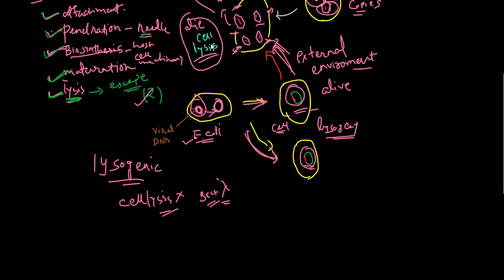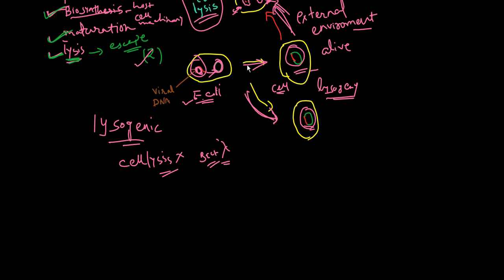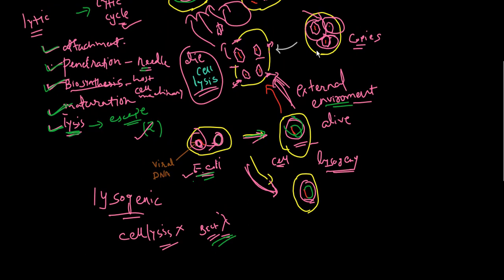In the lysogenic cycle, the virus establishes a relationship with the host cell. The most studied example, bacteriophage lambda, integrates into the host genome, recombining its genetic material. The cell replicates normally, but due to external conditions, the lysogenic cycle can be converted into the lytic cycle.